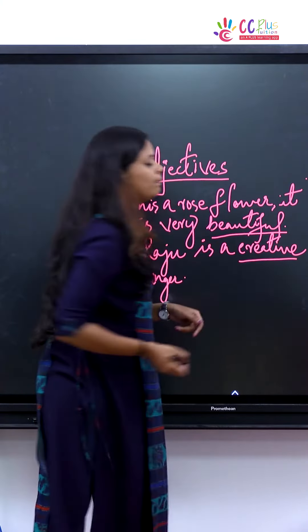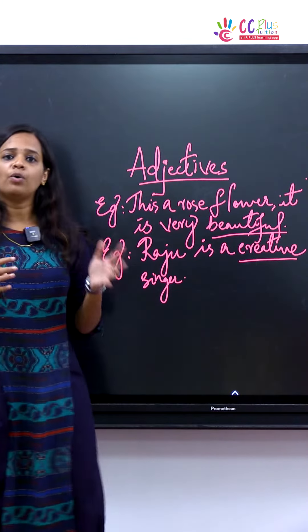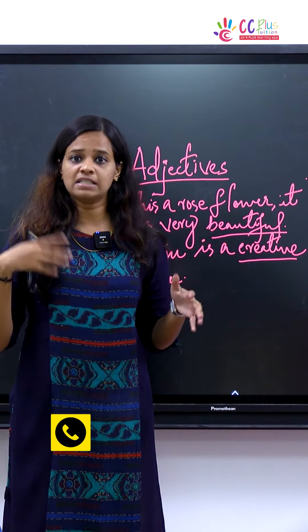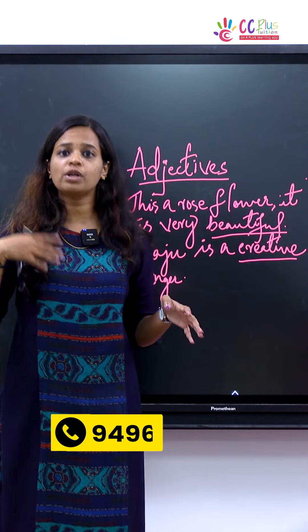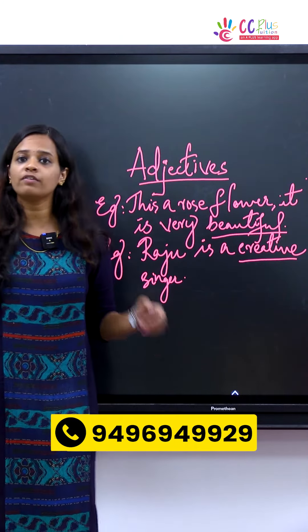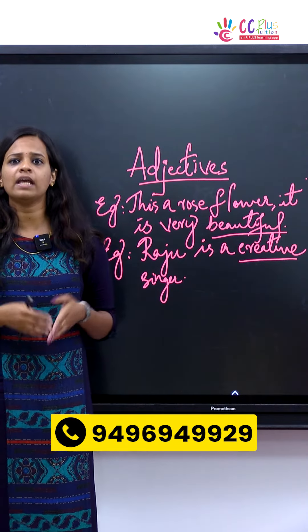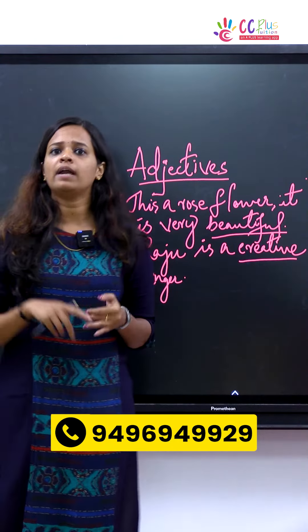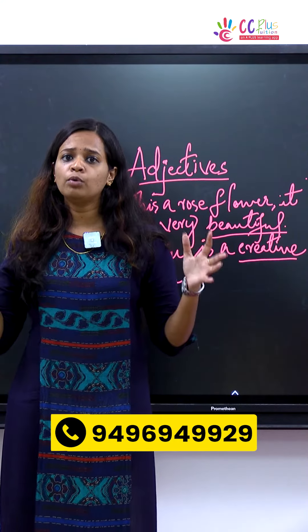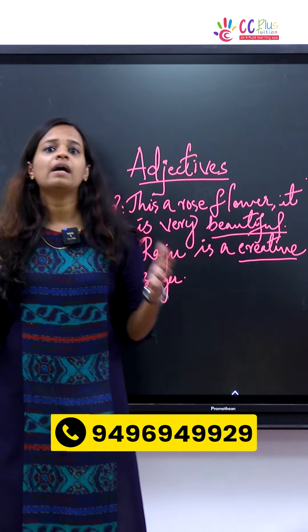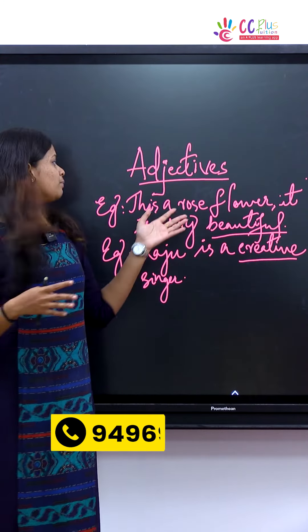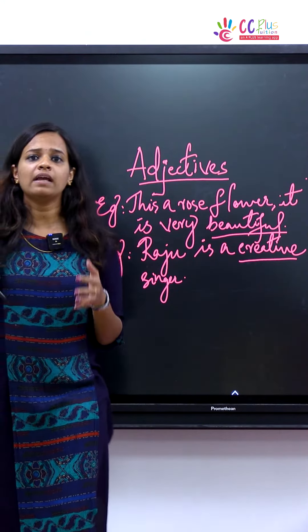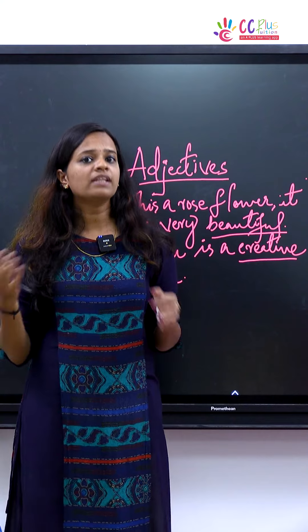So what are the adjectives? The adjectives define and describe the noun. For example: enormous, huge, big, adventurous, beautiful — we can add many adjectives to describe a noun.